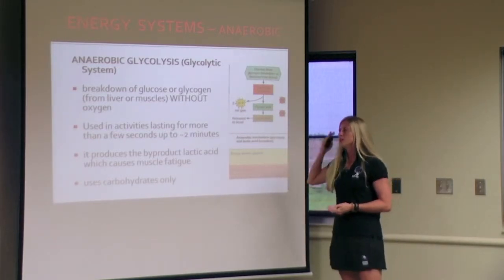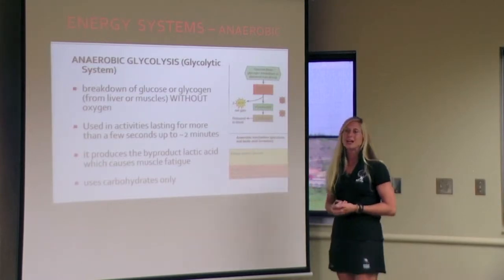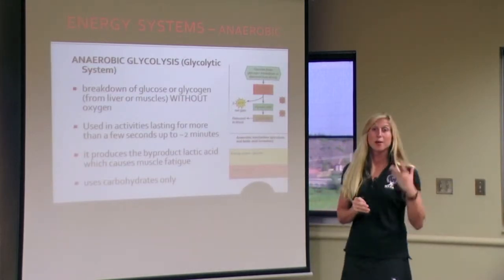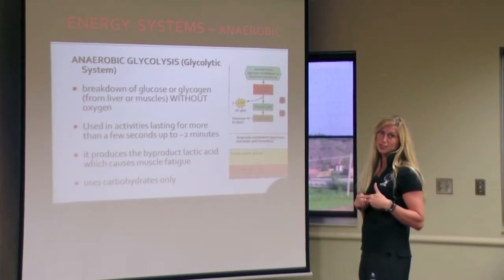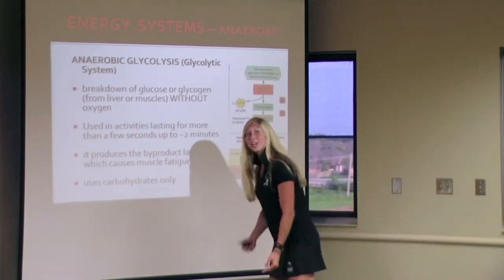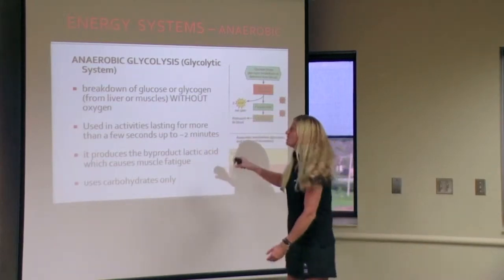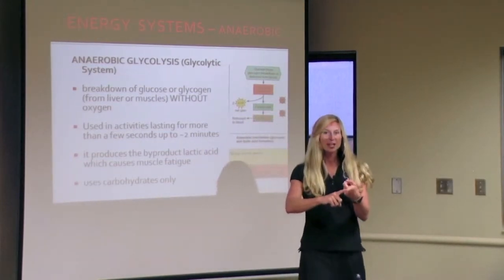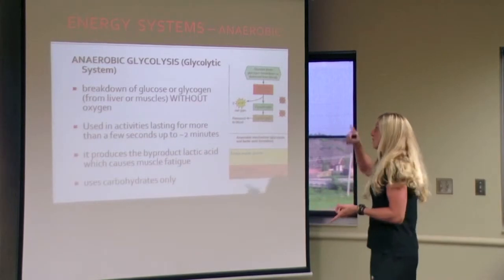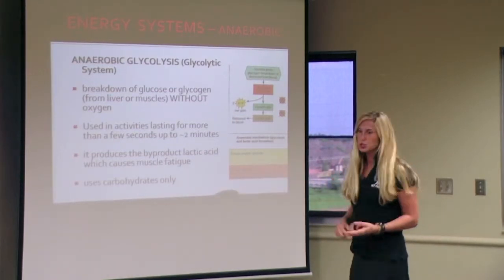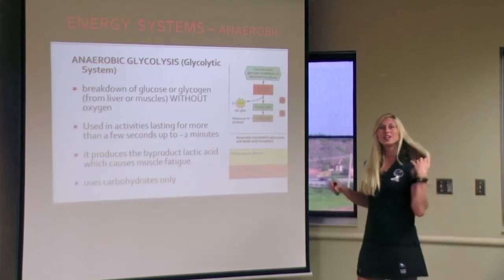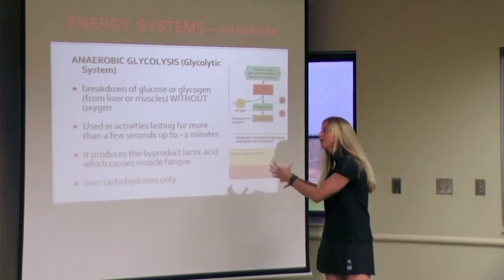As muscle builds up with lactic acid, we experience fatigue — and that's where our circulatory system comes in. When muscles want to quit working, it's because they don't have enough energy and can't absorb any more good stuff: any more oxygen, any more glucose from our blood, because they're saturated with this byproduct.